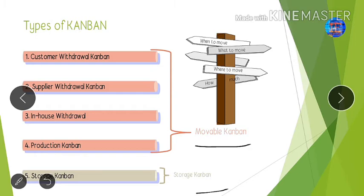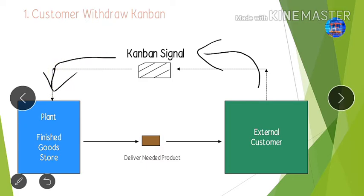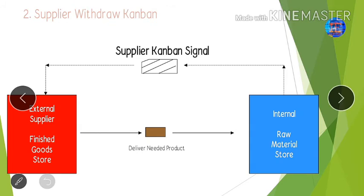For customer withdraw Kanban: Kanban is a tool of the pull system, so when the customer requires the product, they send a Kanban to us — meaning they are pulling us for the parts — and then we send the parts to the external customer.